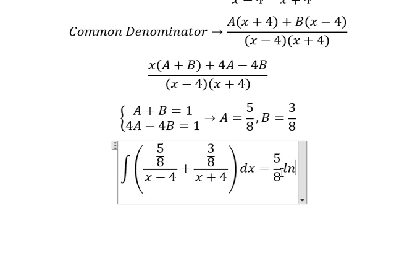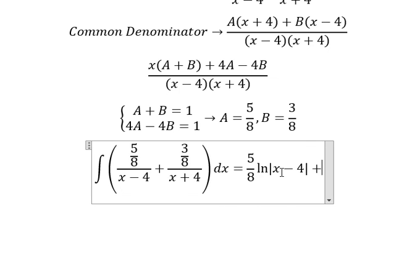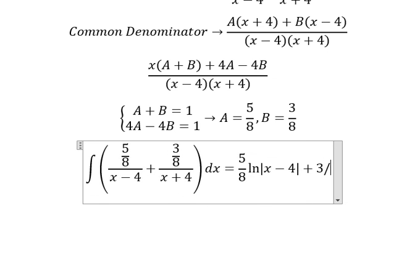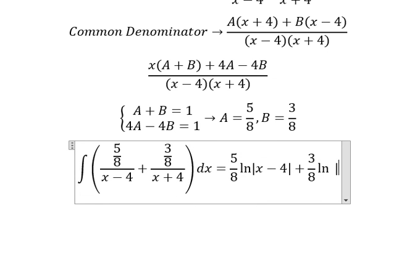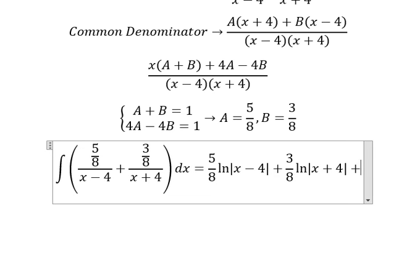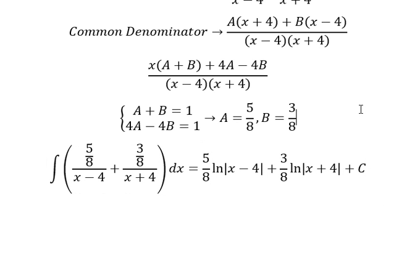Natural log of the absolute value of (x - 4). This one we have 3/8 natural log of the absolute value of (x + 4), and we put C. This is the end. Thank you for watching.